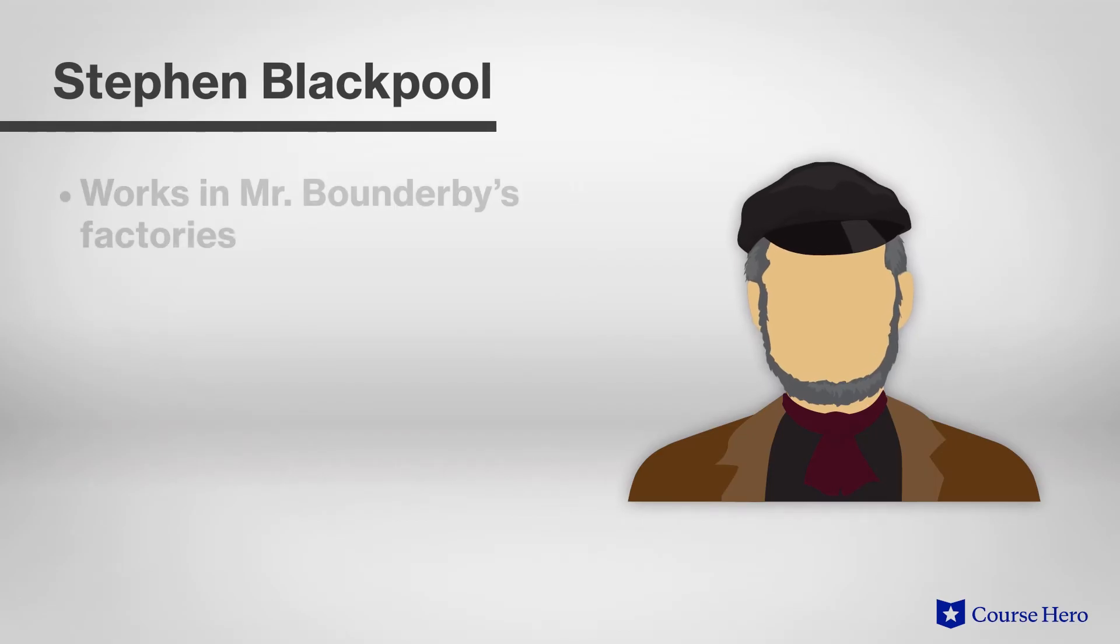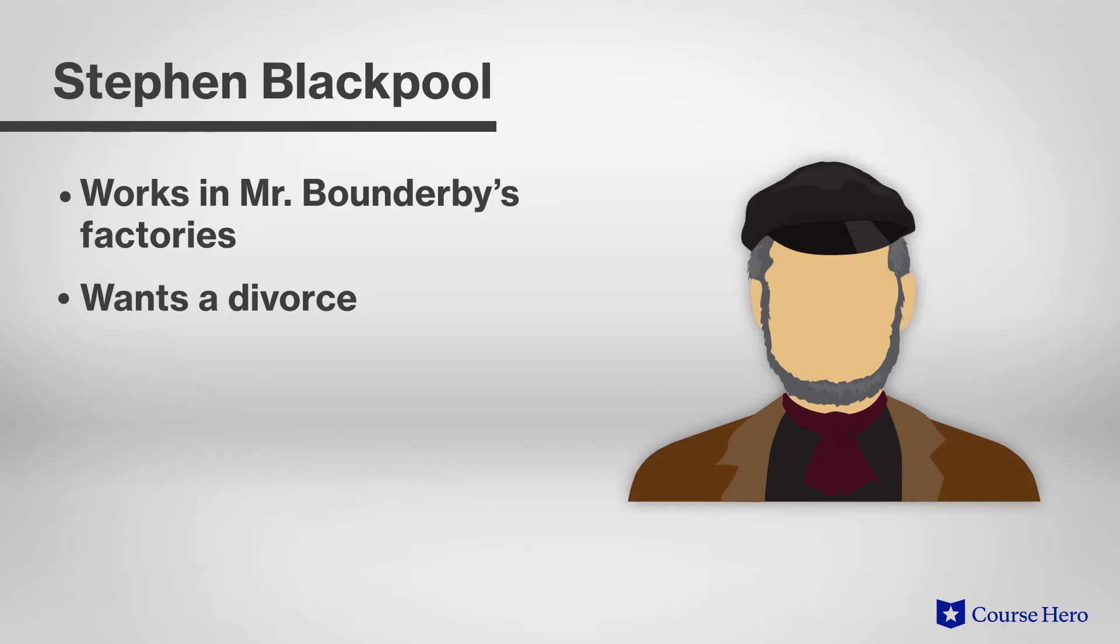Stephen Blackpool works in one of Mr. Bounderby's factories and is married to an alcoholic he'd like to divorce, so he can marry Rachel, the woman he loves. But divorce is not possible for people with no money and influence. He does his duty and work until his honesty and desire to avoid trouble anger both the union organizer and his employer.